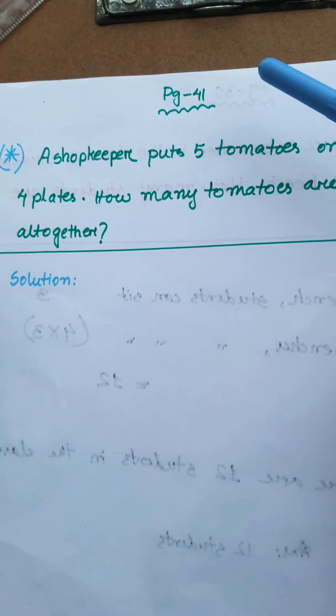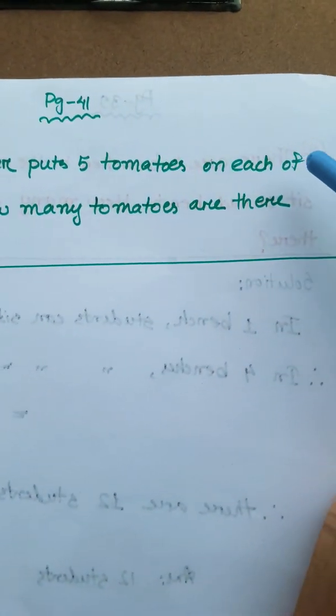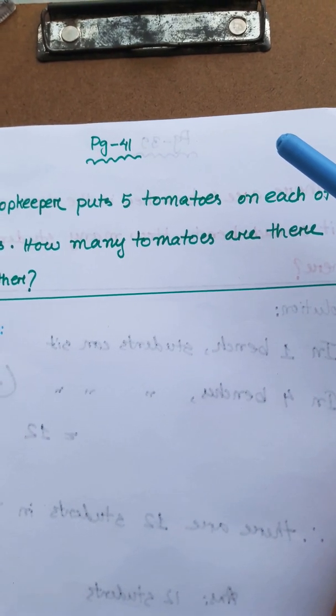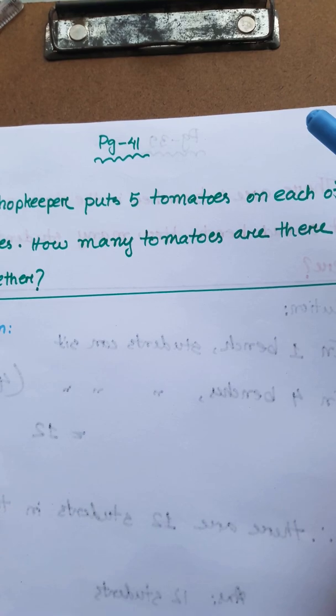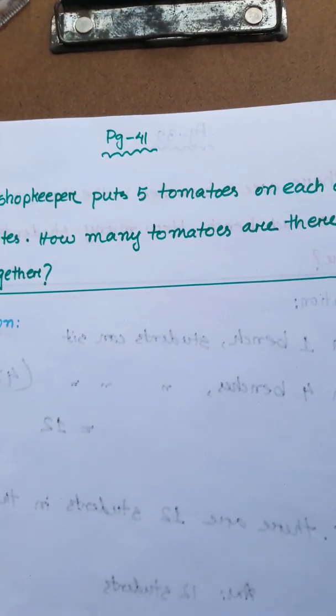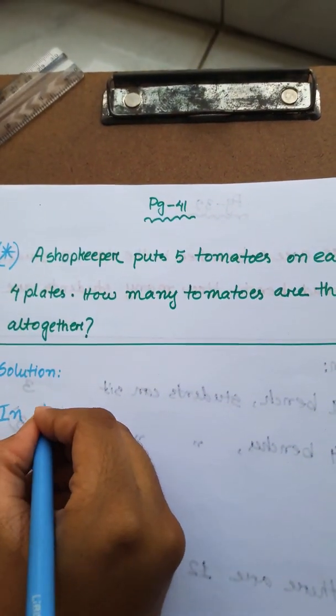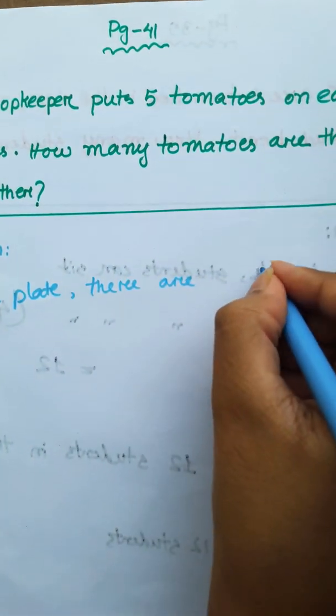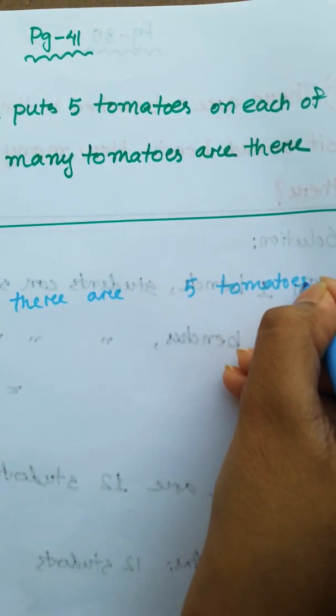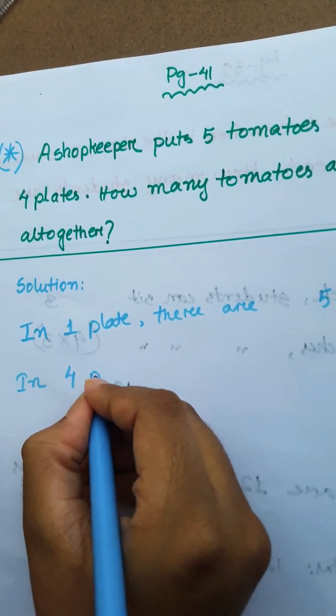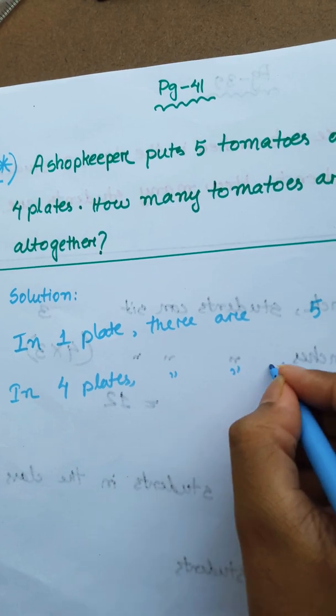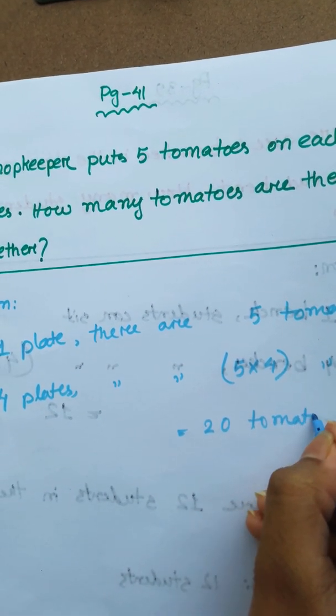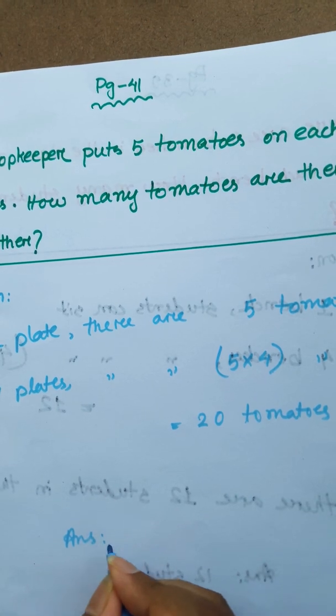Now the next math is page number 41. A shopkeeper puts 5 tomatoes on each of 4 plates. How many tomatoes are there all together? In one plate there are 5 tomatoes. In 4 plates there are 5 into 4 tomatoes, 20 tomatoes. So answer: 20 tomatoes.